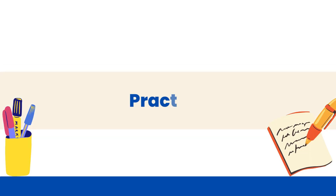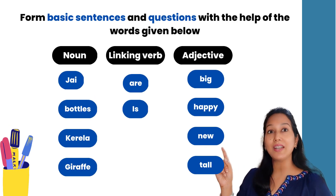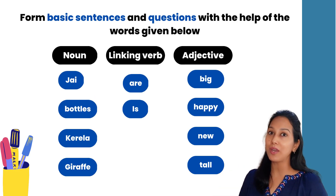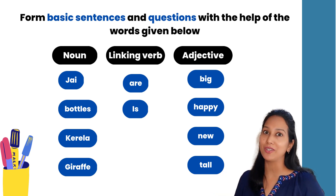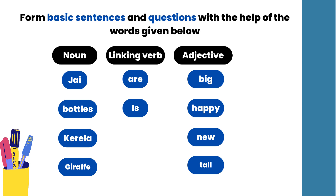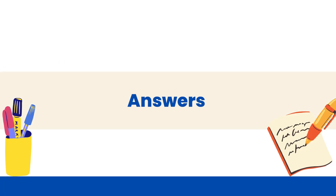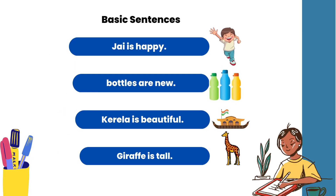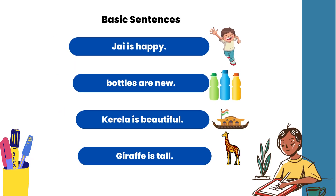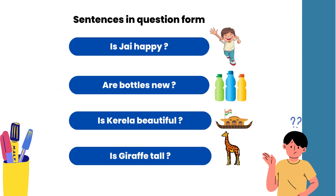Now that you have a basic understanding, let's practice what we have learned today. Here is a list of nouns, adjectives, and words — you have to simply put them together to form a basic sentence and a question. Watch my next video on how to form sentences, part two.